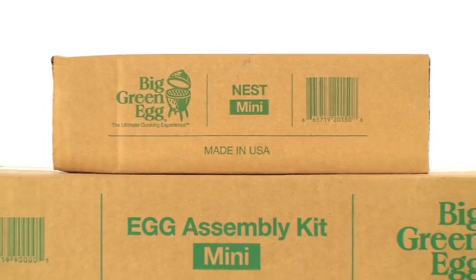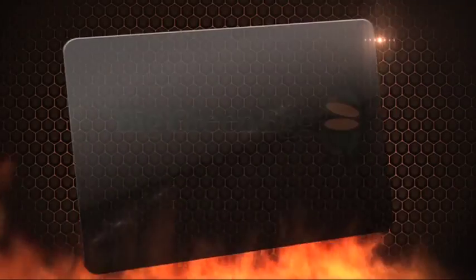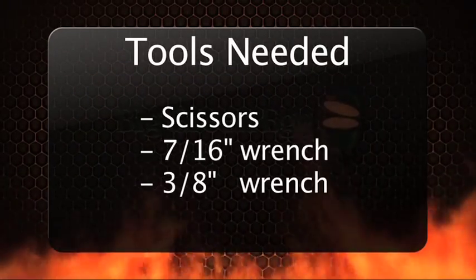The mini Big Green Egg is packed in two boxes. You may have more depending on your purchase of additional products, which could include a nest. To get started, you'll need some basic hand tools to complete the assembly.